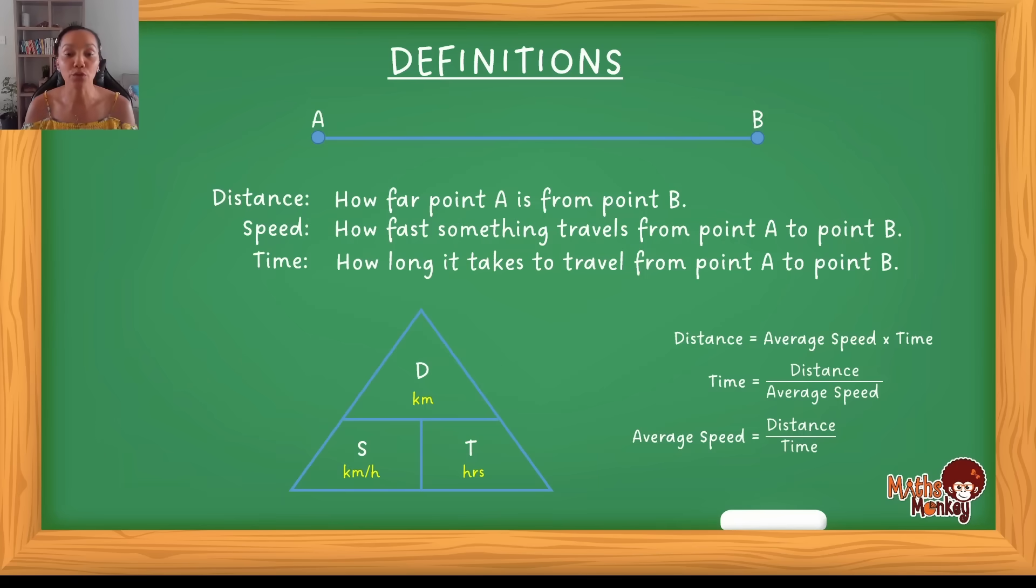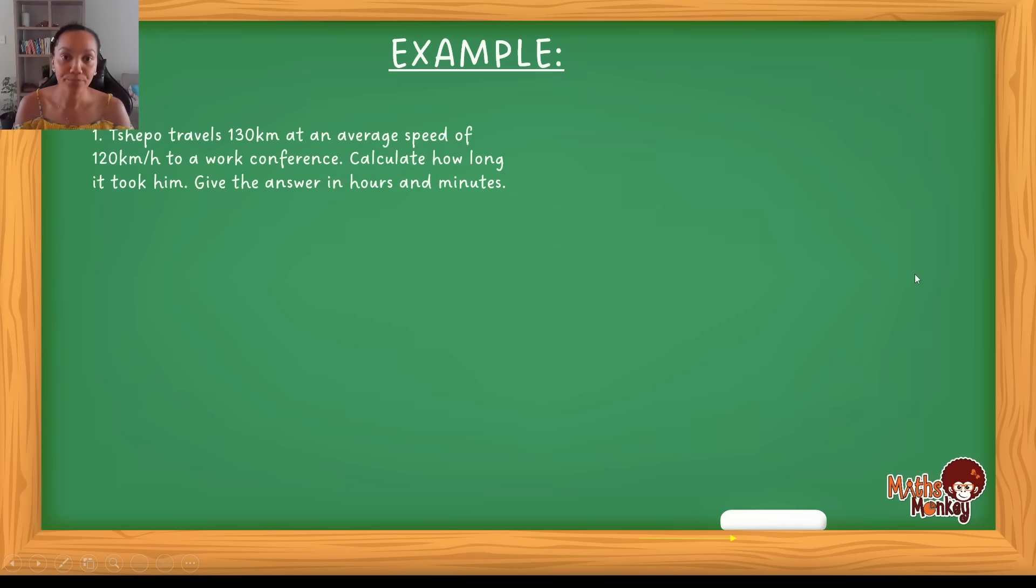Now that we got that out of the way, I'm going to do one example of each where you need to calculate each. And then we're going to look at certain sections where things get a little bit challenging. And I can just show you how you would actually approach that specific aspect of the questions. So Tsepo travels 130 kilometers at an average speed of 120 kilometers per hour to a work conference. Calculate how long it took him. Obviously to travel that distance and then give your answer in hours and minutes. The calculation is pretty easy. It's where things get tricky is the hours and minutes. So let me show you how you're going to approach this. So firstly, we look at the triangle.